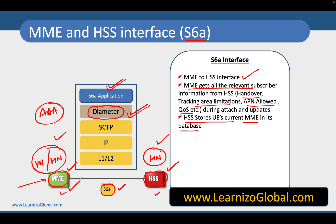So whenever there is some incoming information about the user, HSS can refer to the MME information for routing that particular incoming data for the end user. The incoming data typically comes to HSS, HSS shares information about the MME, and then that data can be routed to that particular MME. That is the purpose of the S6a interface.